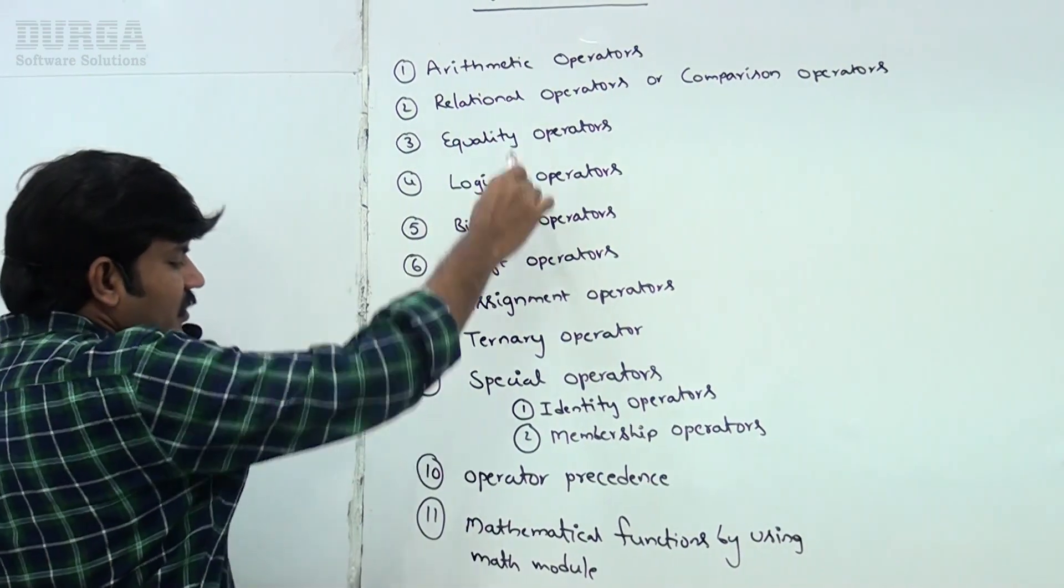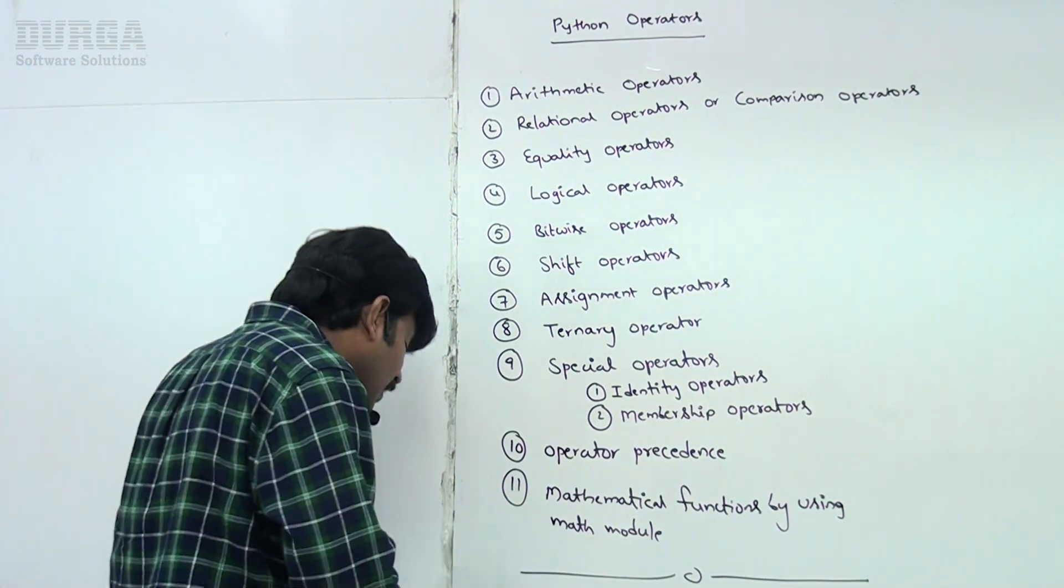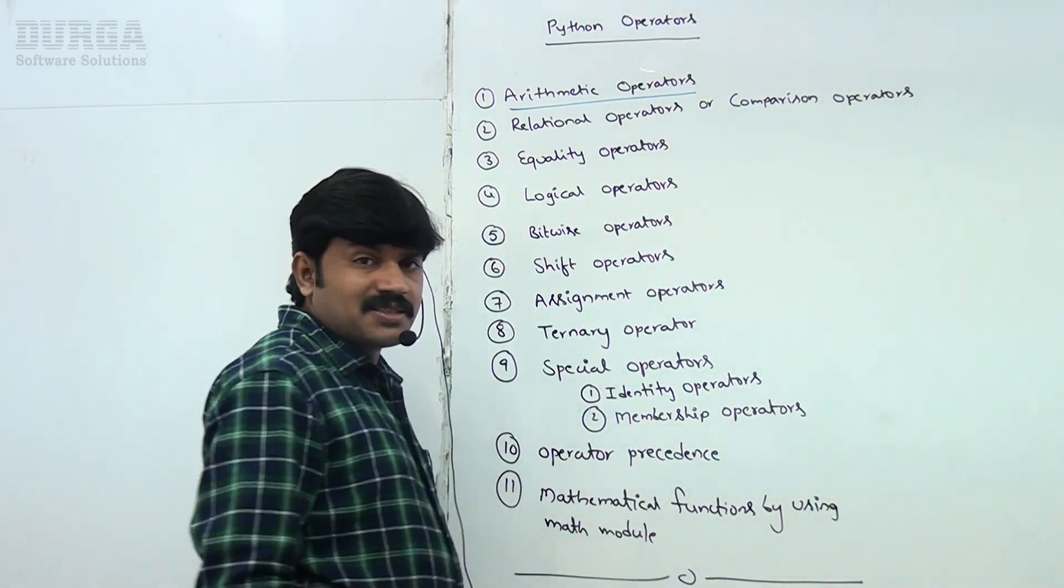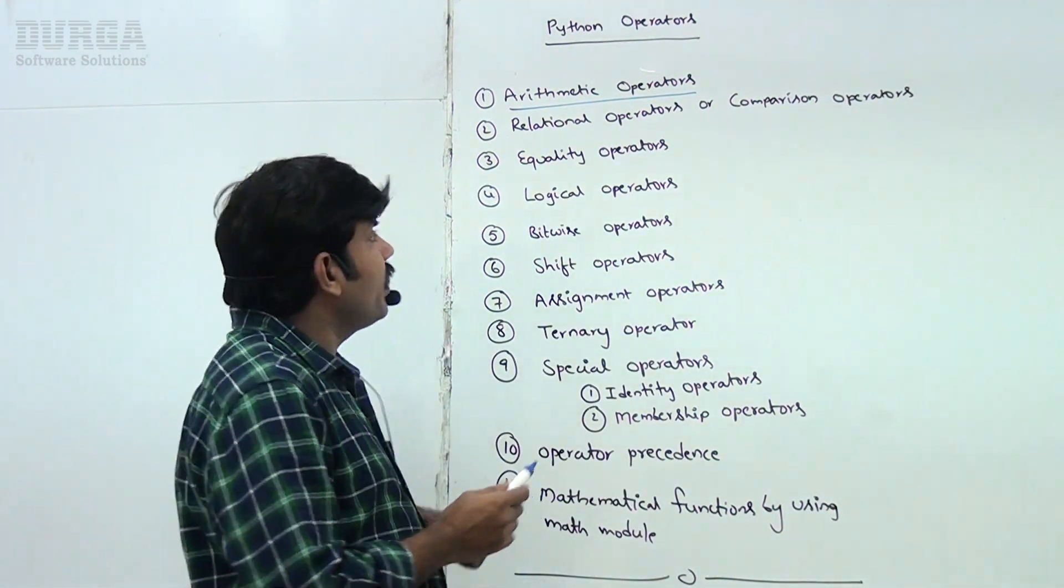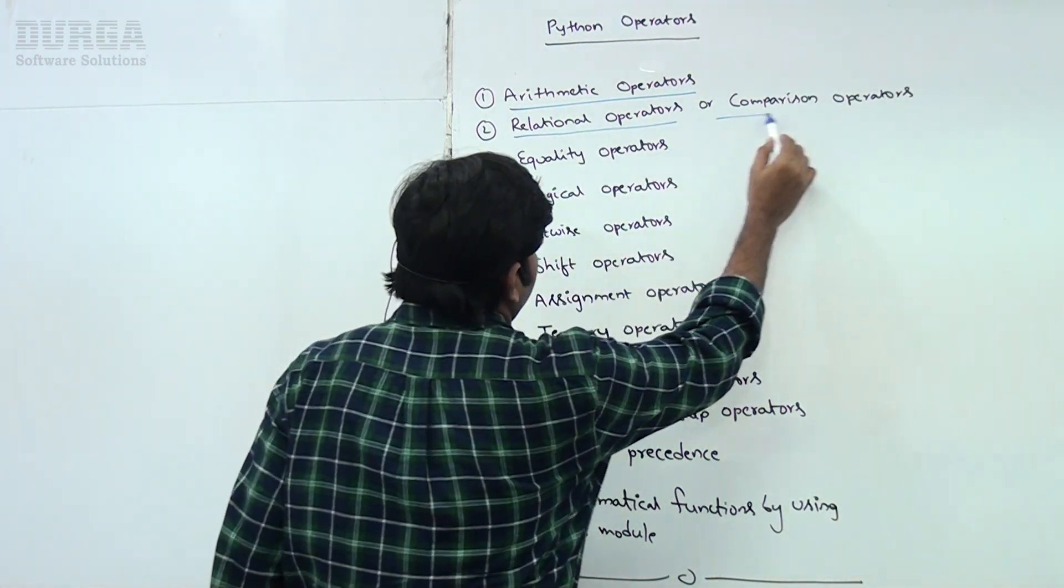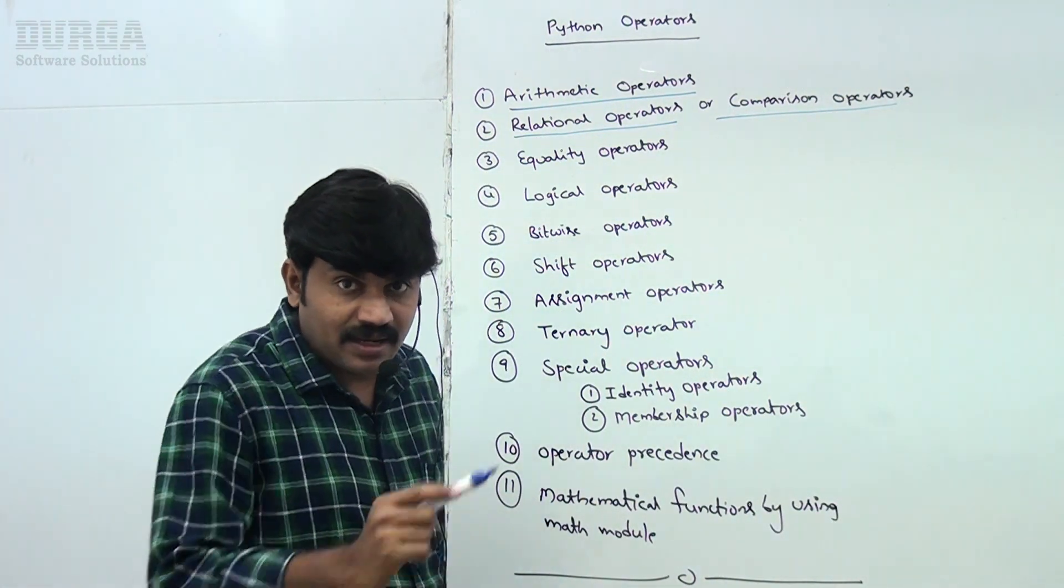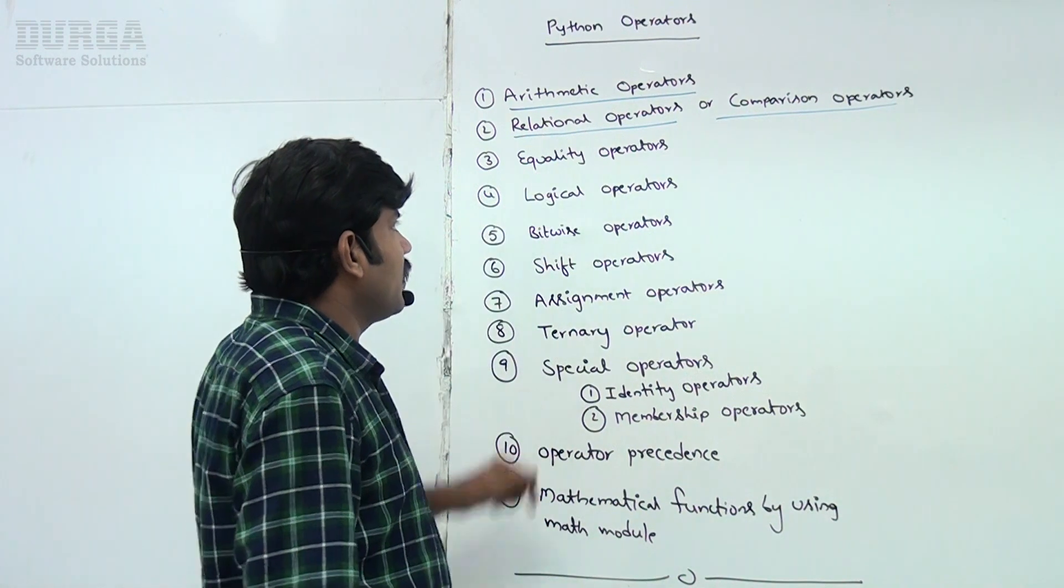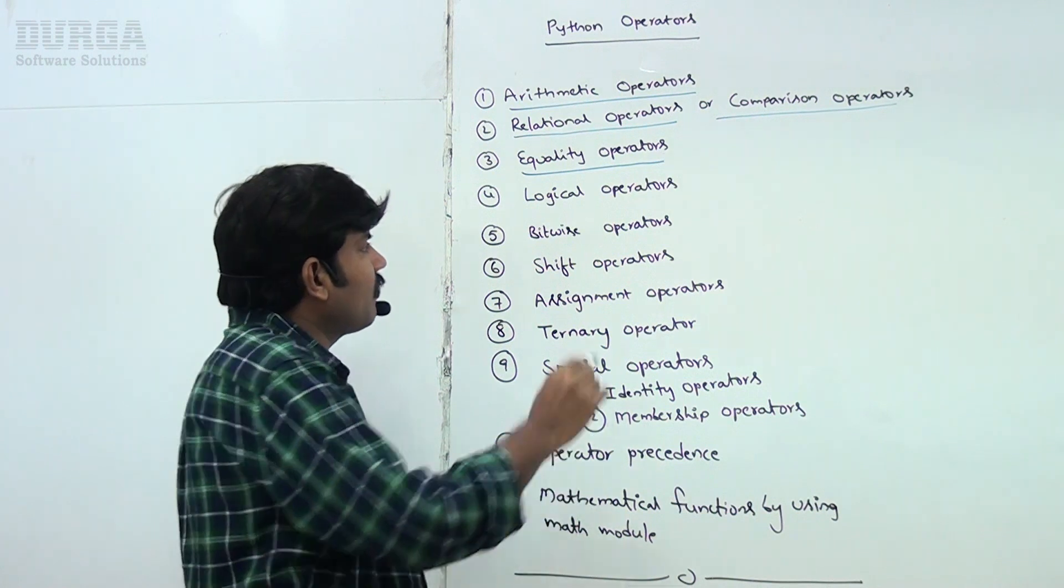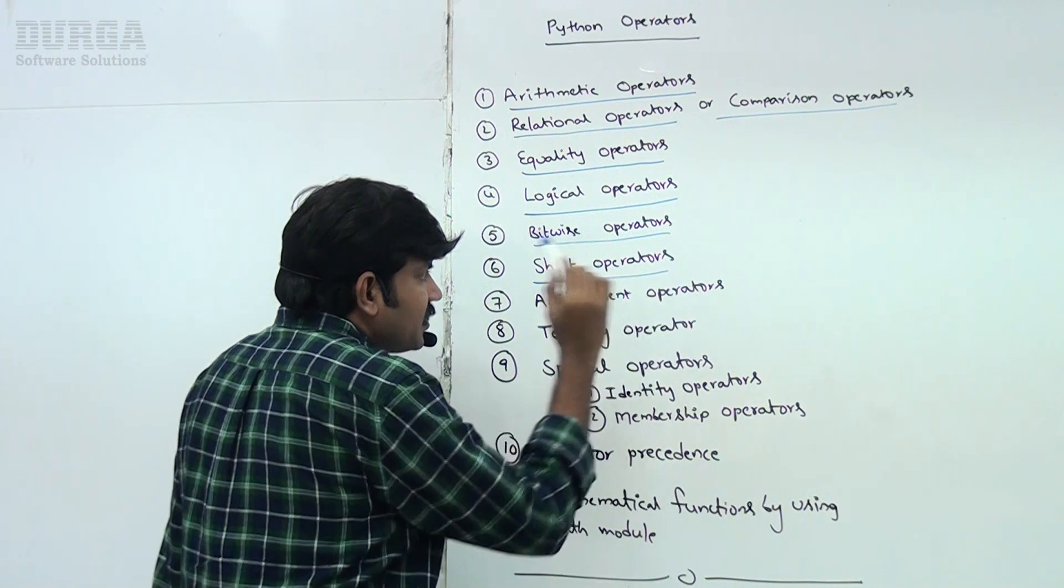Related to this operators concept, what topics do we have to discuss? These are 11 topics. First topic is arithmetic operators - we have to perform addition, subtraction, multiplication operations. Next, relational operators or comparison operators - greater than, greater than or equal to, less than, less than or equal to. Next, equality operators - double equal, not equal. Logical operators, bitwise operators.